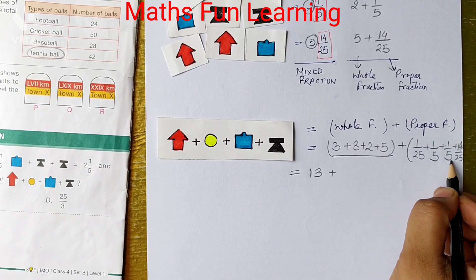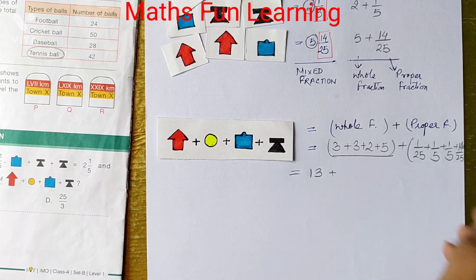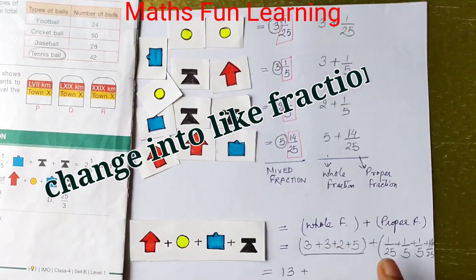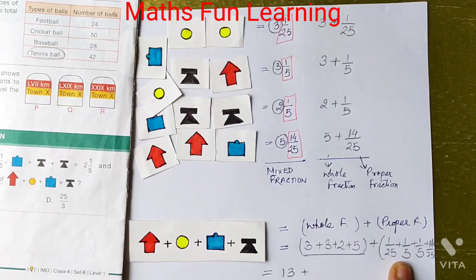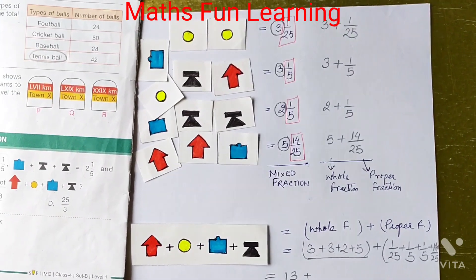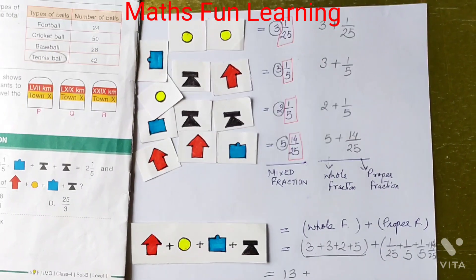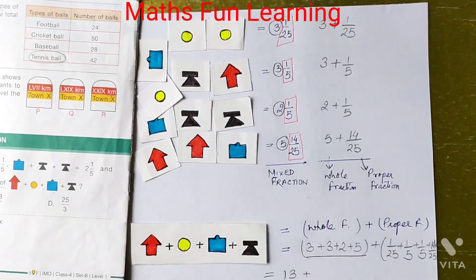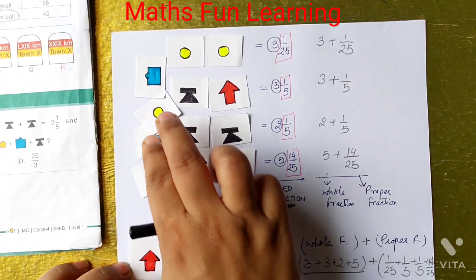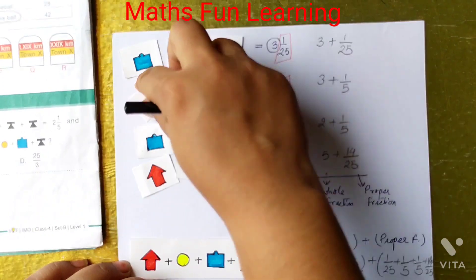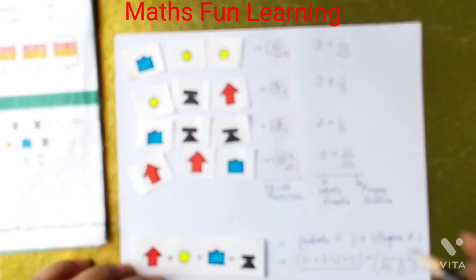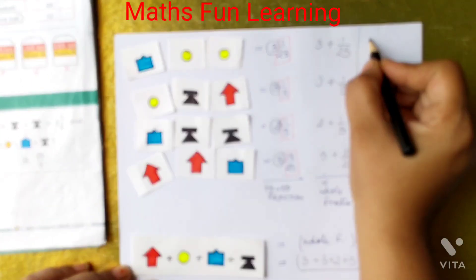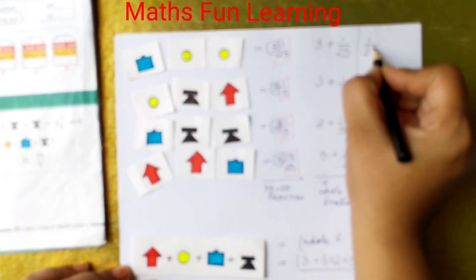What about this? These are fractions. But these fractions are not like fractions. Very good. You add these fractions only when you have like fractions. So when it is a like fraction, then only you can add these.